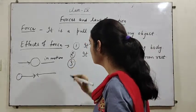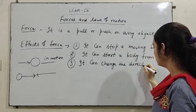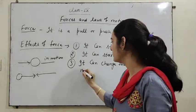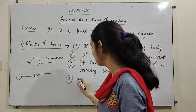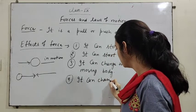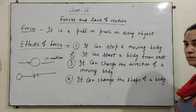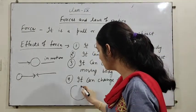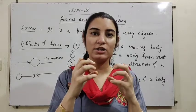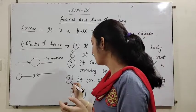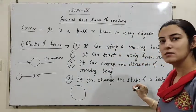Number three: force can change the direction of a moving body. Number four: force can change the shape of a body. For example, if a balloon is pressed between two hands, we will see that the shape of the balloon changes. This change is due to the balanced force applied by our hands on the balloon.